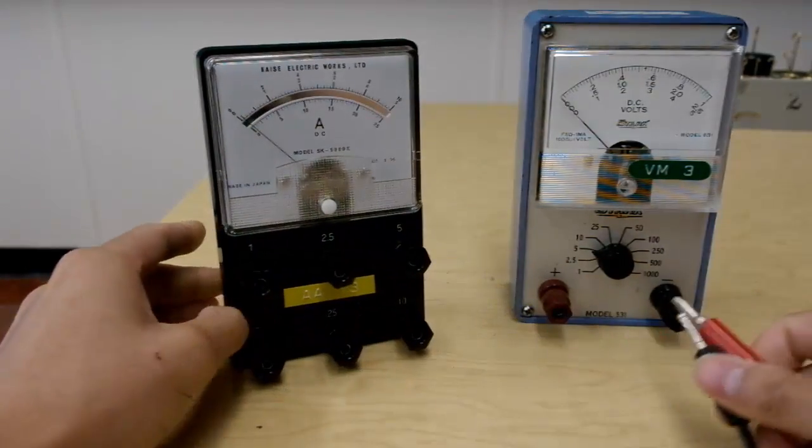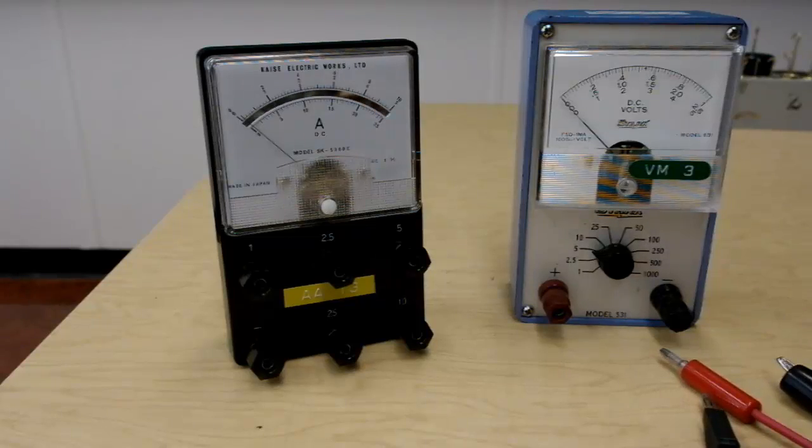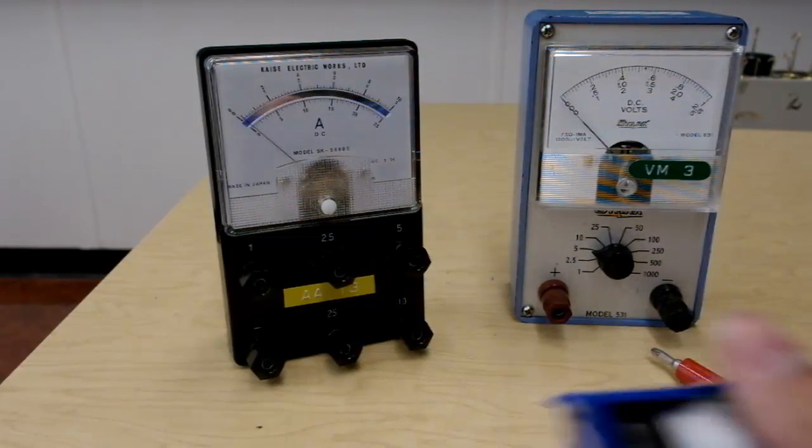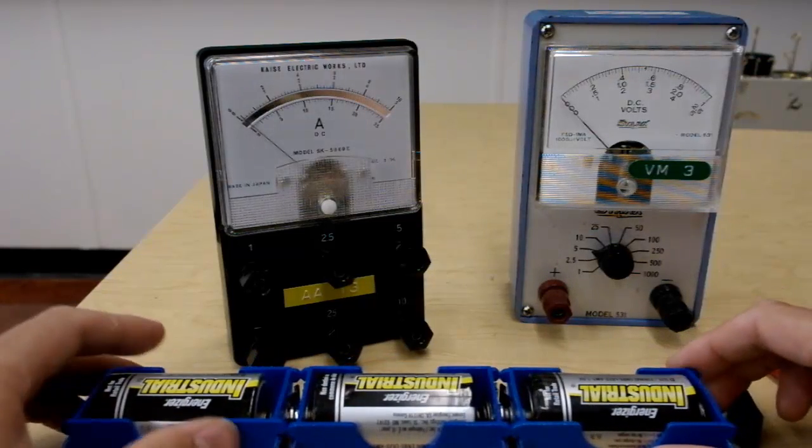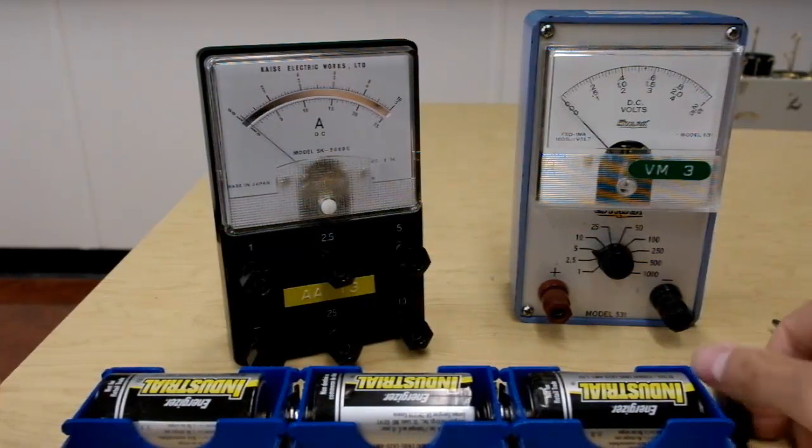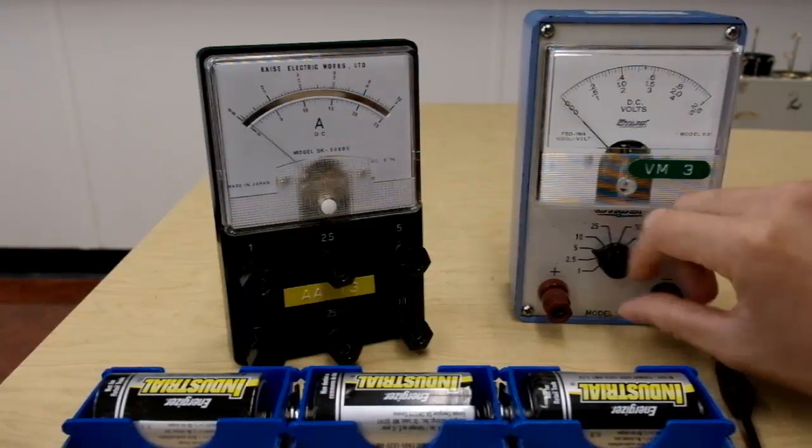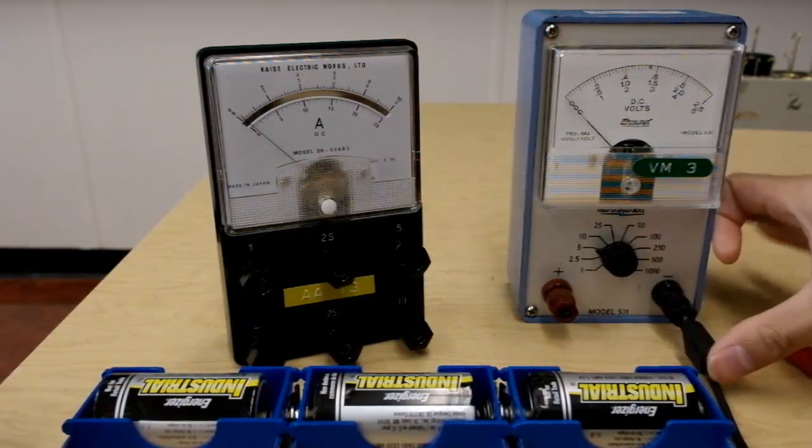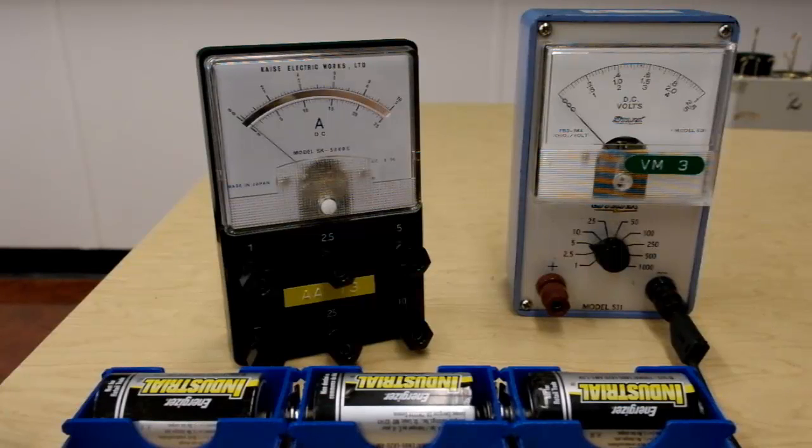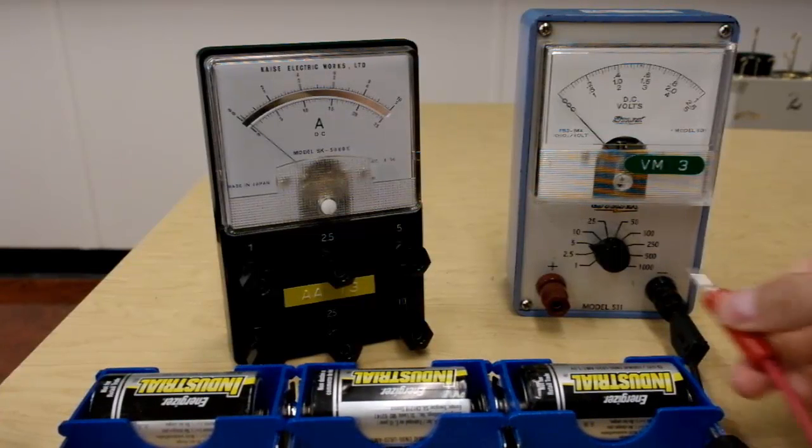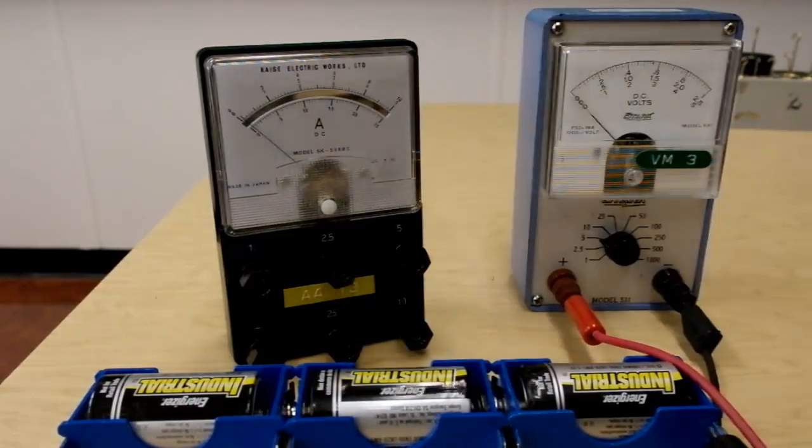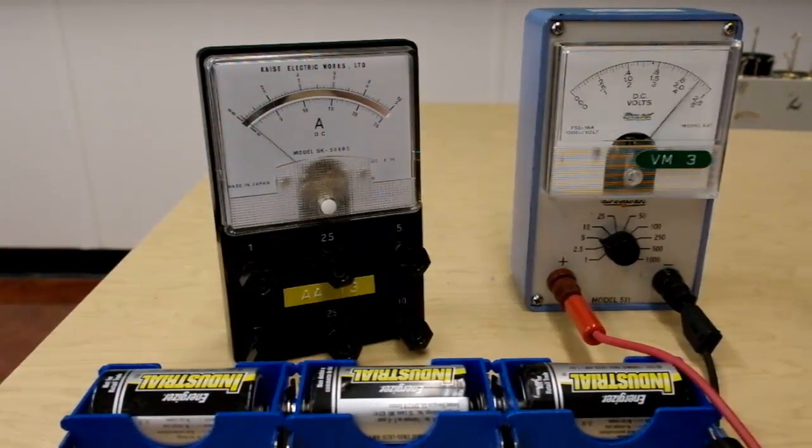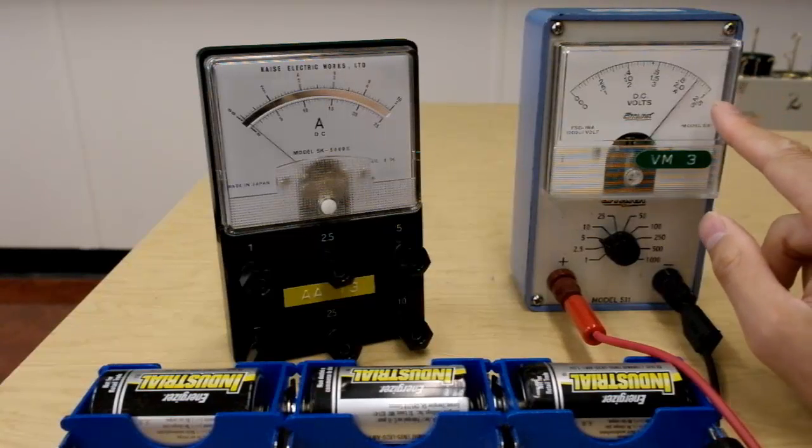So, let's just do a real simple example of reading something. Here, I have a set of three batteries in series. So, the voltage I would expect would be 4.5 volts. And so, if I hook this up, I get a reading of about 4.5 volts.